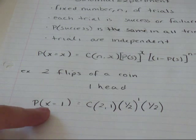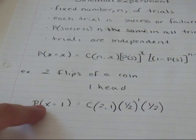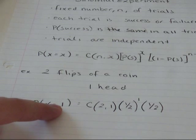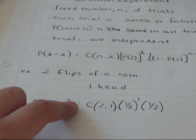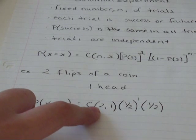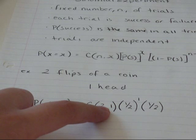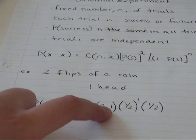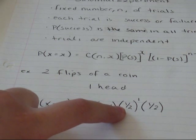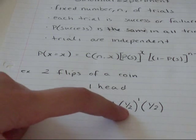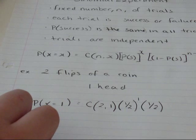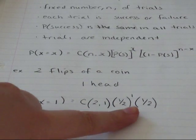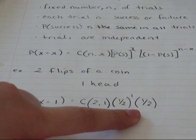I'm going to let X equal one. So the probability of X equaling one success, I'm going to say a success is getting a head, equals C(2,1) - out of two flips, I'm choosing one to be my success. The probability of a success is one over two to the power of however many successes I want. I want one success. The probability of failure is also one over two.